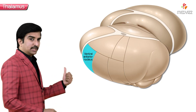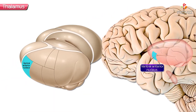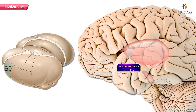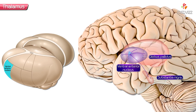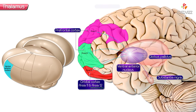First is the ventral anterior nucleus. This ventral anterior nucleus receives input from the globus pallidus as well as from the substantia nigra, and it projects diffusely to the prefrontal cortex, orbital cortex, and premotor cortex, which is Brodmann area number 6.